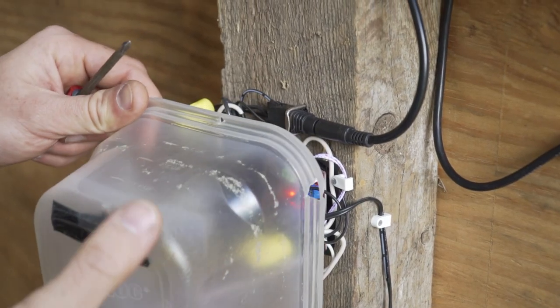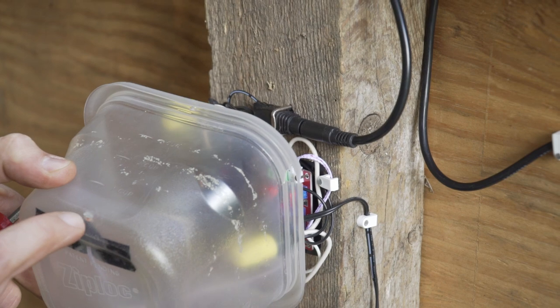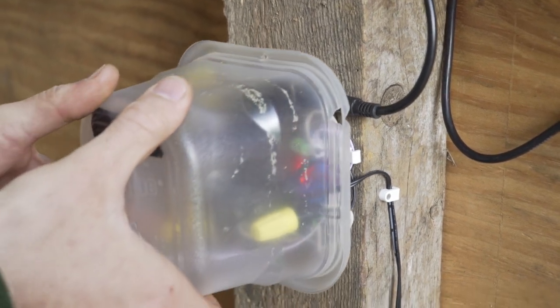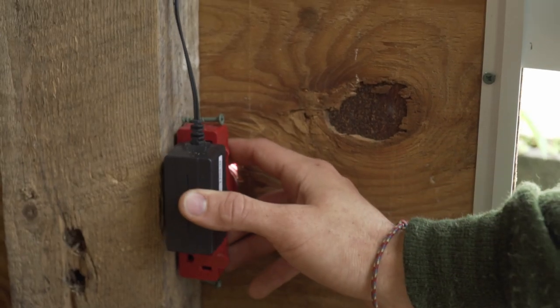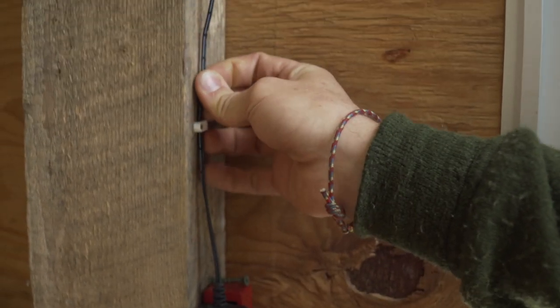The clear plastic box ensures that the light sensor inside can sense whether it's day or night, and dust doesn't collect on the components. This whole system runs off of a 12-volt DC power supply.